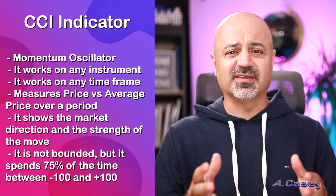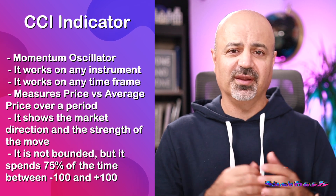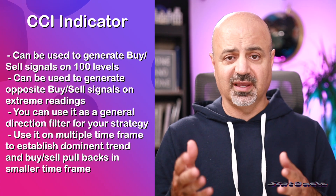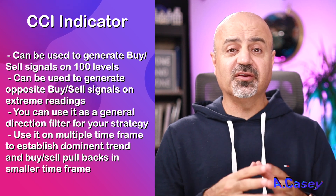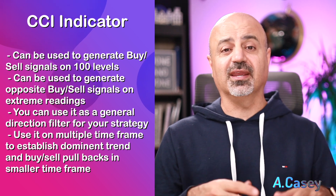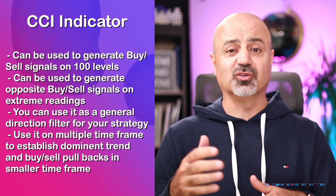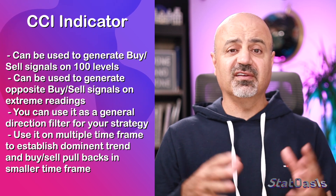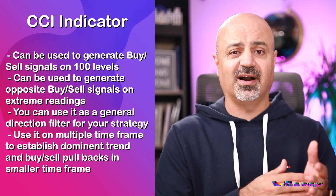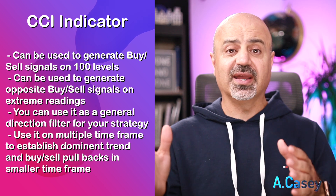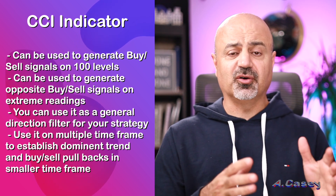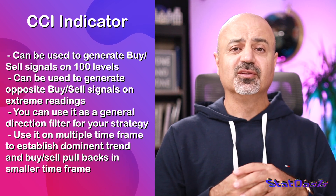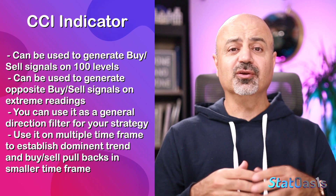The oscillator shows the direction and strength of the market trend, and it is not bounded like other oscillators — it goes above zero, below zero, with no limits on how far it can go. It will depend on the market and your lookback period. That said, it spends 75% of the time between minus 100 and plus 100. The CCI is a very versatile indicator and can be used in multiple ways — to generate trend-following signals, reversal signals, or as a filter for general trend bias.